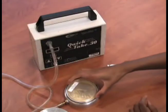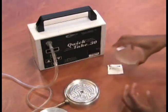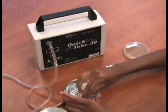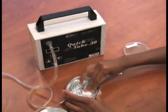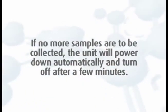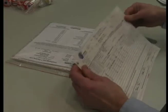If using the Quick Take 30 with an Anderson N6 sampler and agar plate, be sure to clean the N6 sampler using a clean alcohol wipe prior to starting your next sample. If no more samples are to be collected, the unit will power down automatically and turn off after a few minutes.